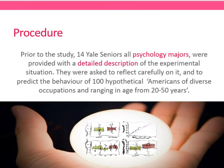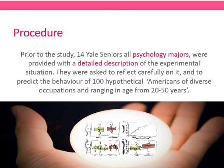Moving on to the procedure. Prior to the study, 14 Yale seniors — psychology majors — were provided with a detailed description of the experimental situation, Milgram's research proposal. They were asked to reflect carefully and predict the behaviour of 100 hypothetical Americans of diverse occupations ranging in age from 20 to 50 years. In other words, they were asked: if we get 100 participants of all different occupations and ages, how many do you think would obey the authority figure and agree to commit this immoral act?